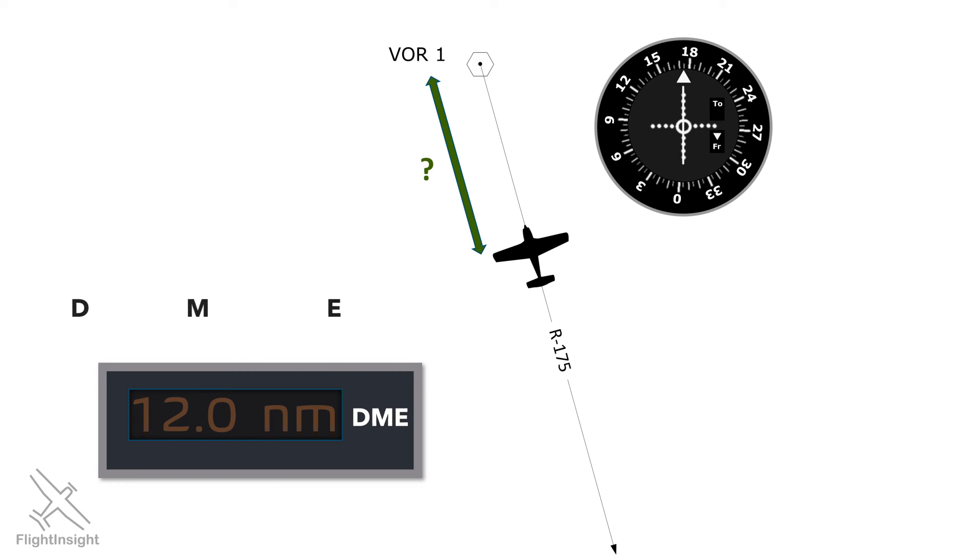DME is a piece of equipment that measures distance, and stands for distance measuring equipment. A readout like this one in the cockpit displays our distance from the station.